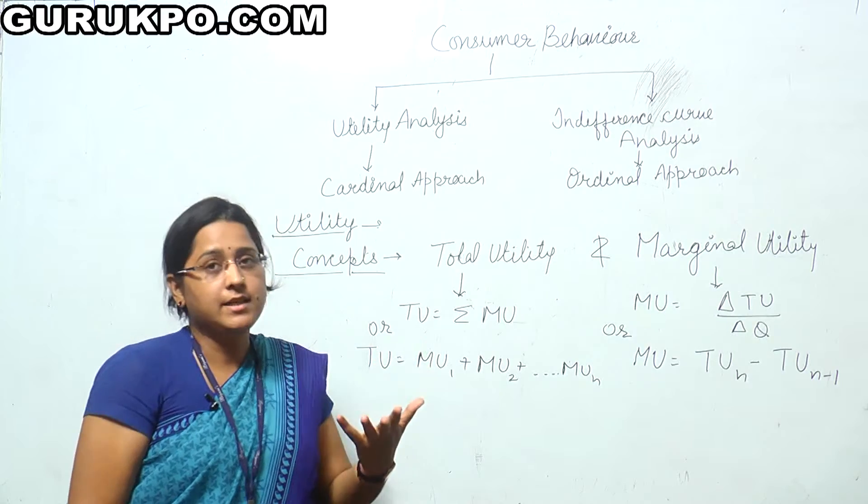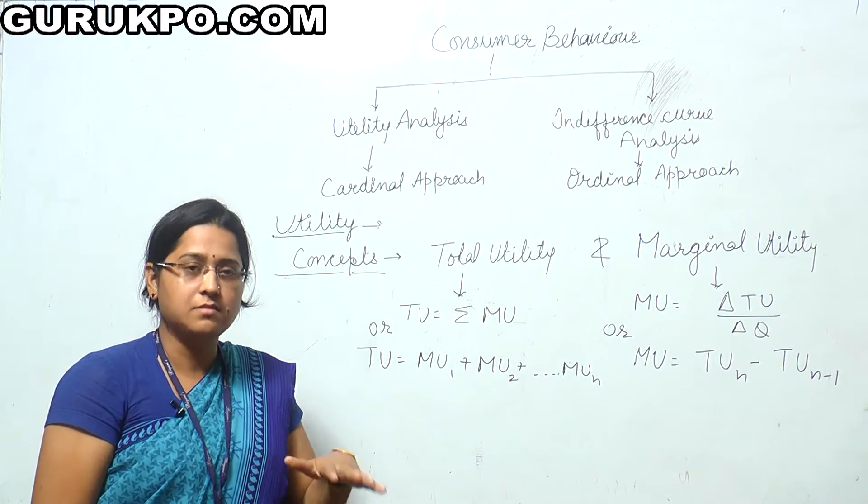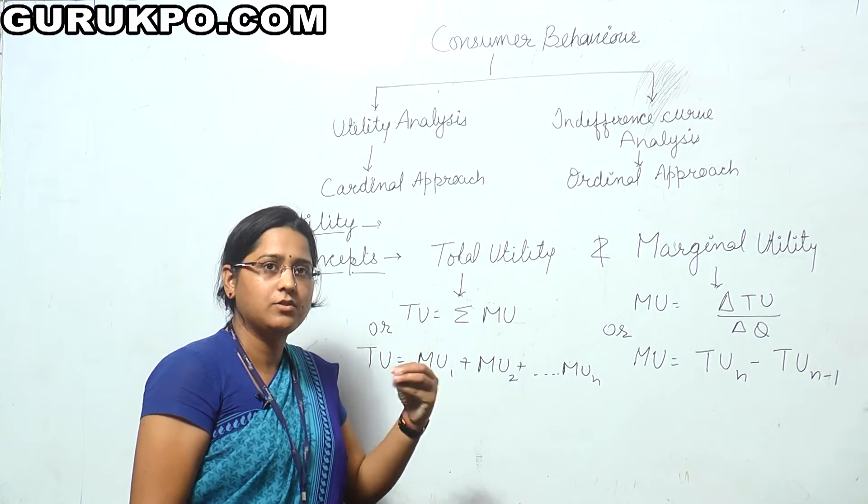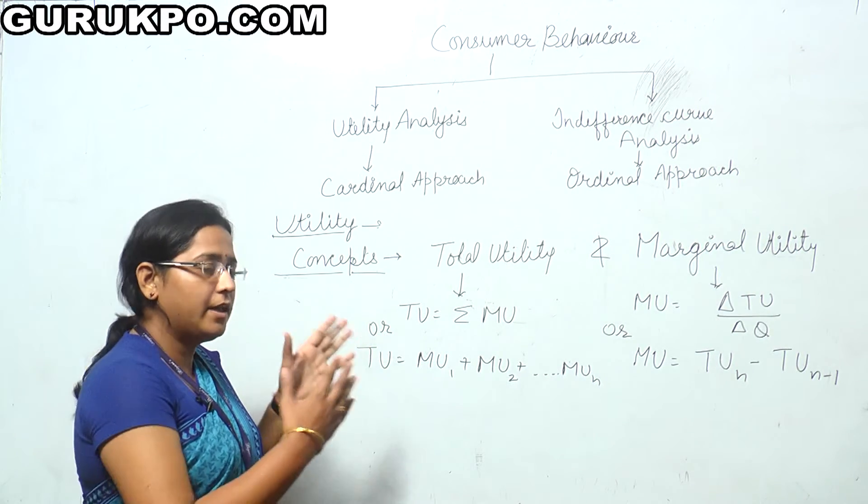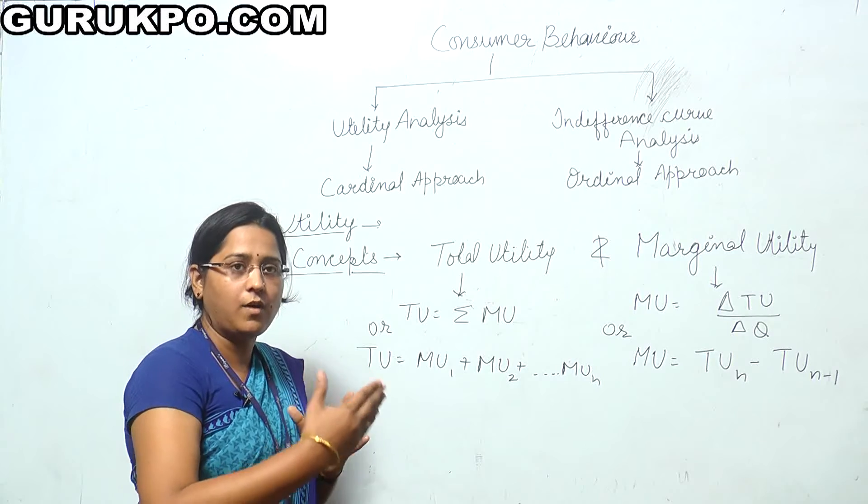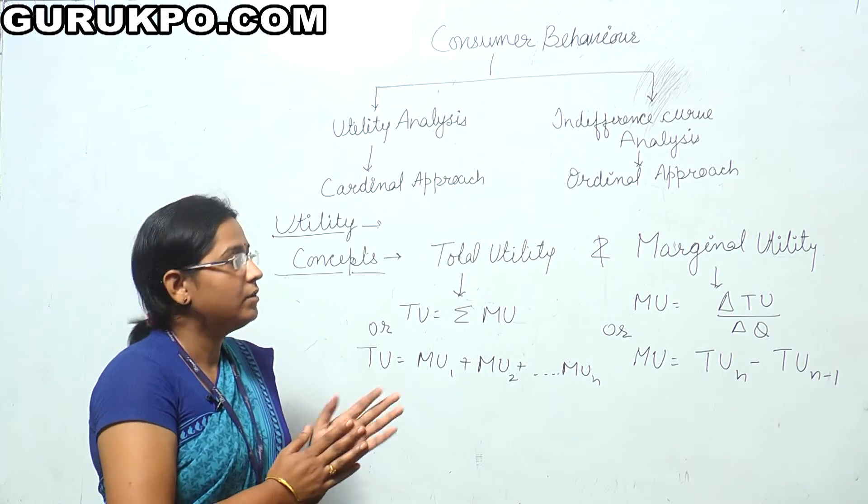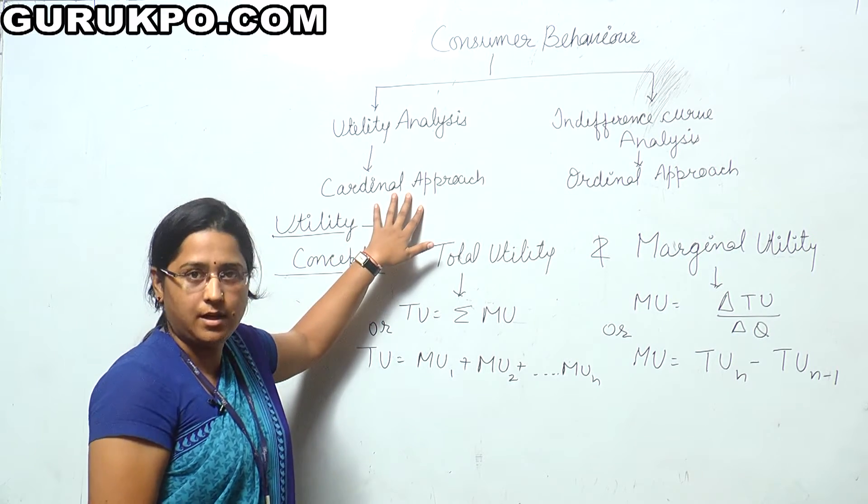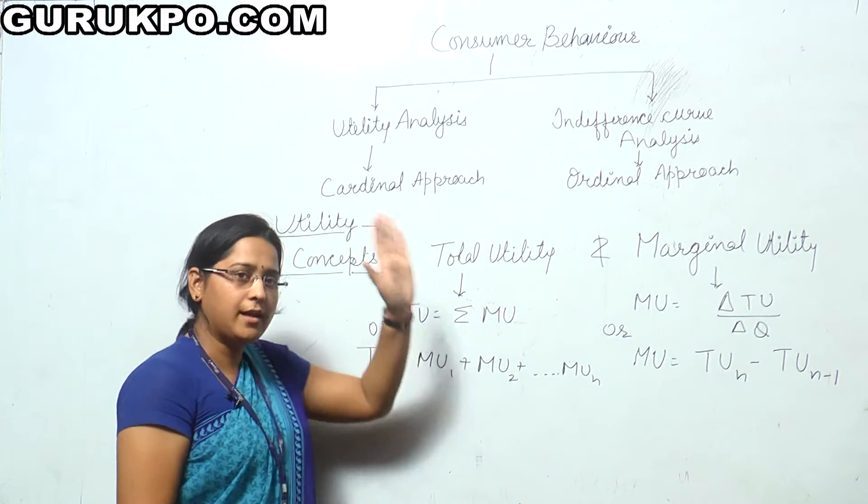Why we say this is cardinal approach? Because Marshall measures utility into the utils or he gives the utility into the 1, 2, 3, 4. That's why we say this utility analysis is the cardinal approach analysis also.